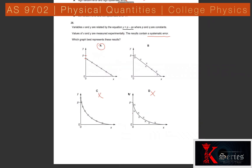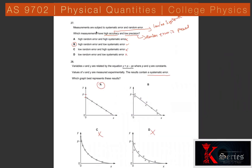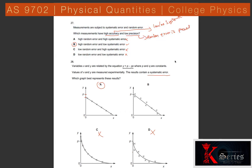Question 27: High accuracy means low or no systematic error. Low precision means high random error. Therefore the combination of high accuracy and low precision corresponds to: high random error and low (no) systematic error. The answer is B.